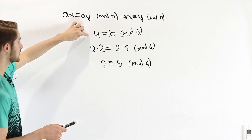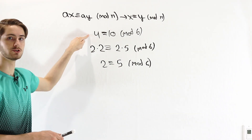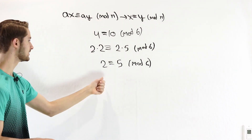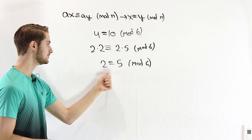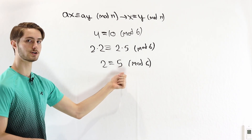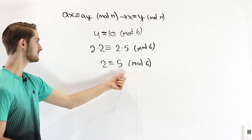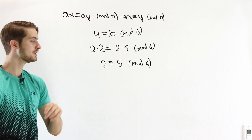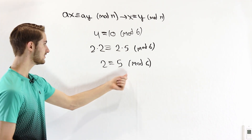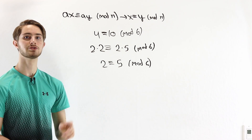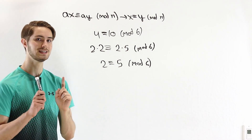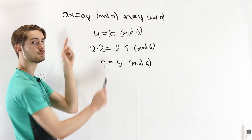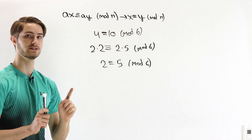Now we know that our original congruence was true — these two numbers are congruent mod 6. But 2 is definitely not congruent to 5 mod 6, because dividing 2 by 6 gives remainder 2, and dividing 5 by 6 gives remainder 5. So this cancellation rule doesn't work all the time.